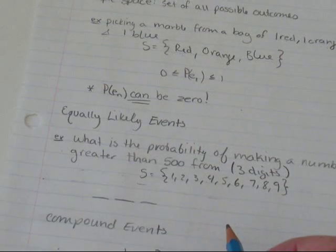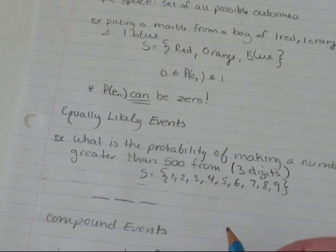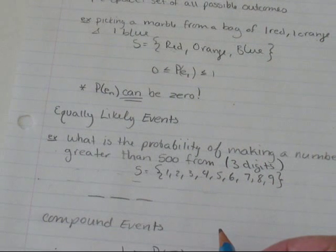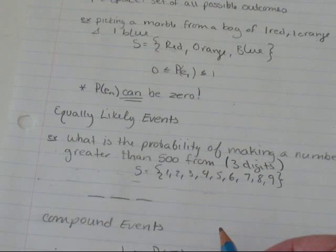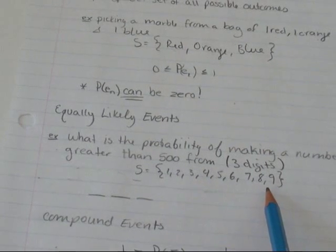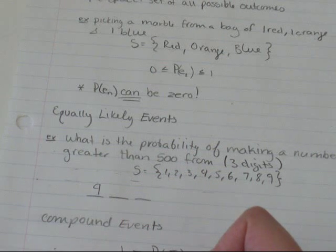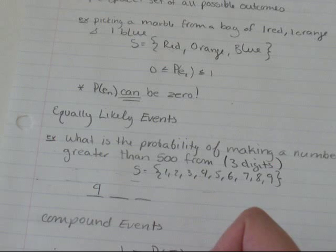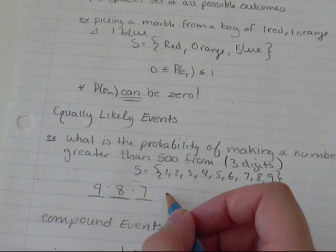So, first of all, it says greater than 500. So, I'm going to think, what are all possible combinations that I could make? And then, I'm going to subtract from that the amount of numbers I could make that are not greater than or equal to 500. So, first of all, how many numbers could I make? Well, I have nine elements in my sample space. So, I've got nine options for my first number. And then, numbers don't repeat. So, that leaves me with eight options here and seven options here.